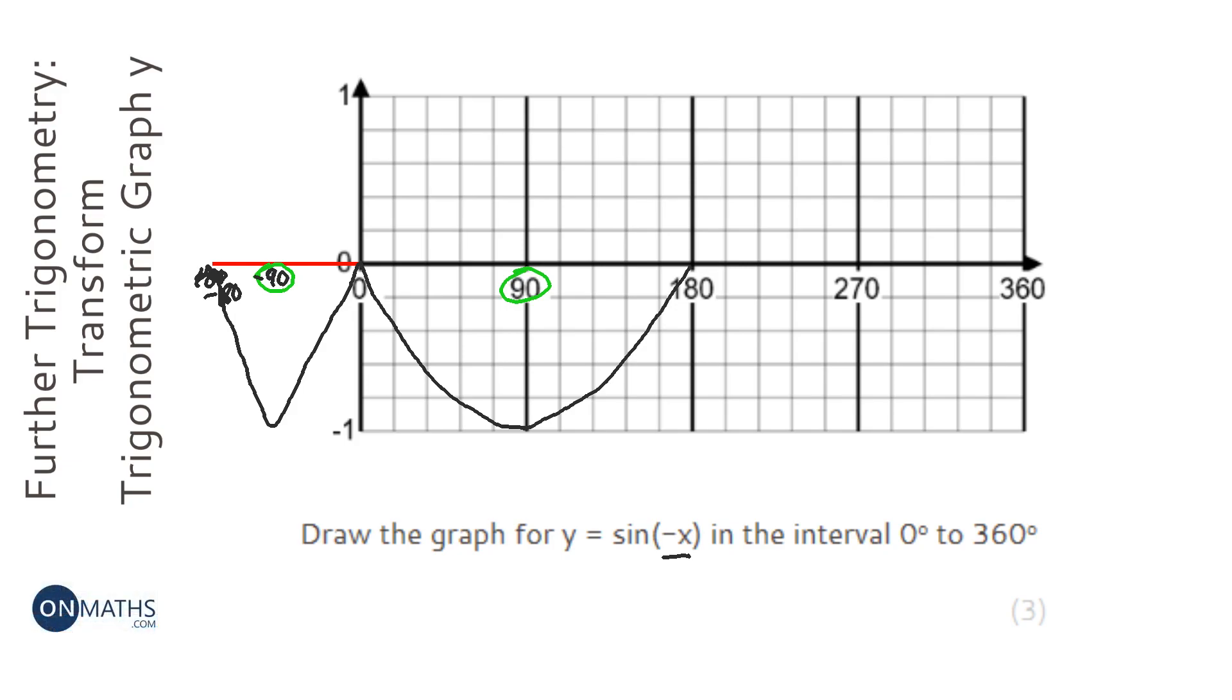And then when we type in 270, we'll actually type in minus 270, which if you continued the graph to the left-hand side would be at 1. And then 360 is also at 0.